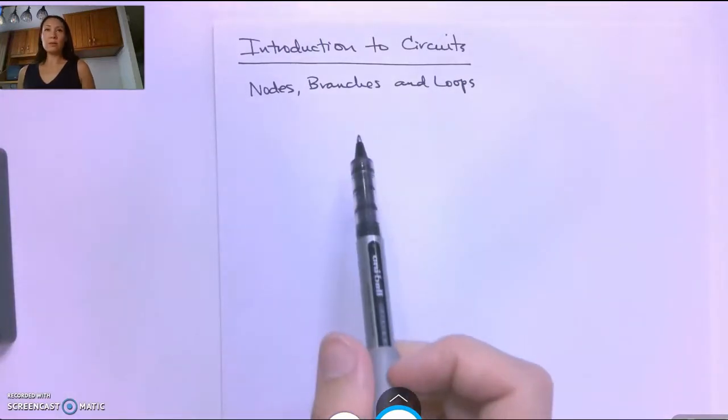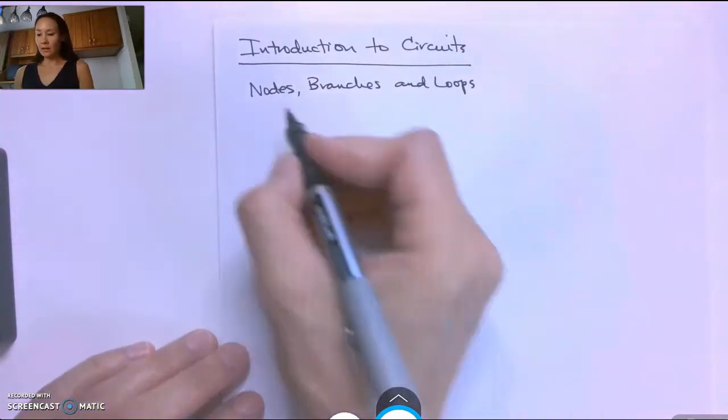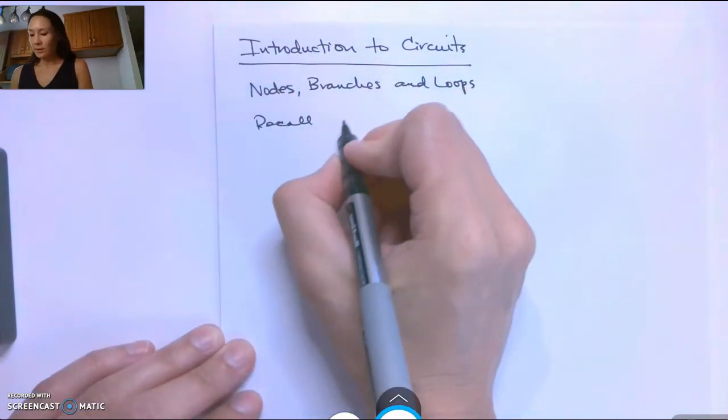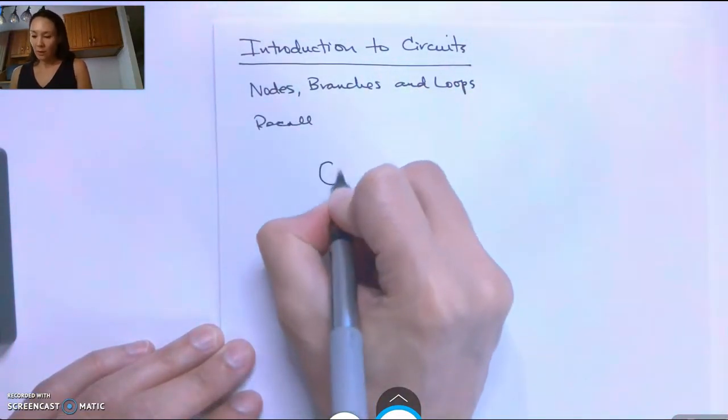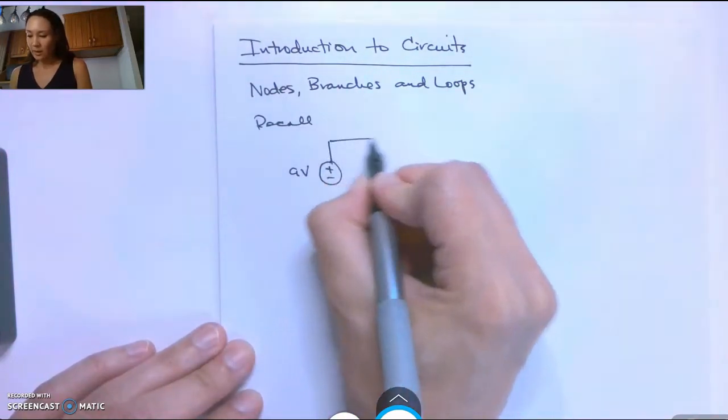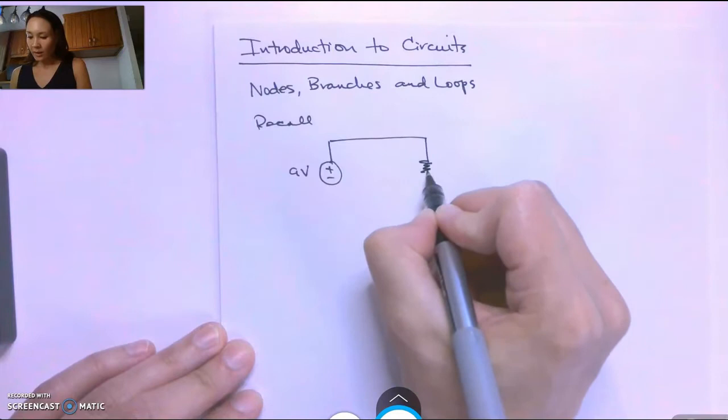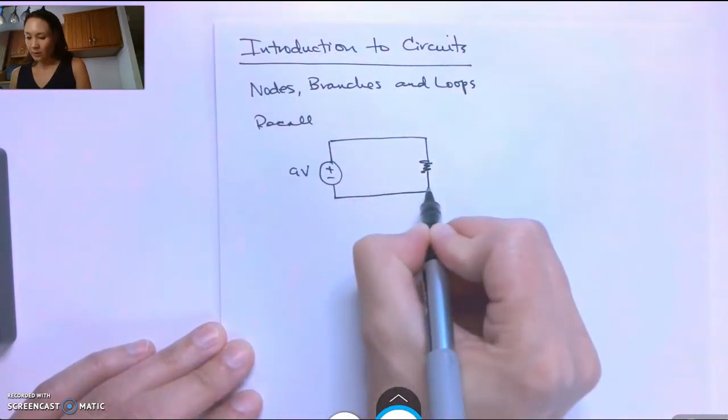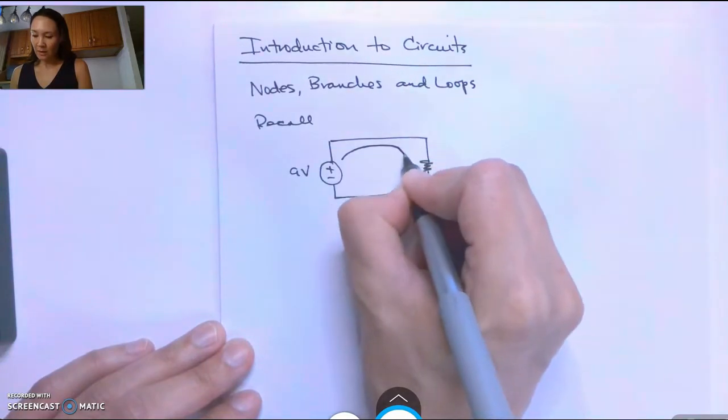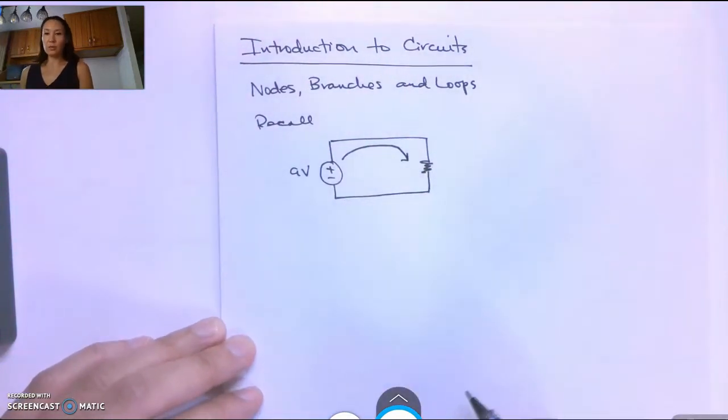Now let's talk about nodes, branches, and loops in circuits. Recall our basic resistive circuit from last time. We had a 9 volt DC source and we connected just one resistor and we had a current that started from here and went around in this loop.